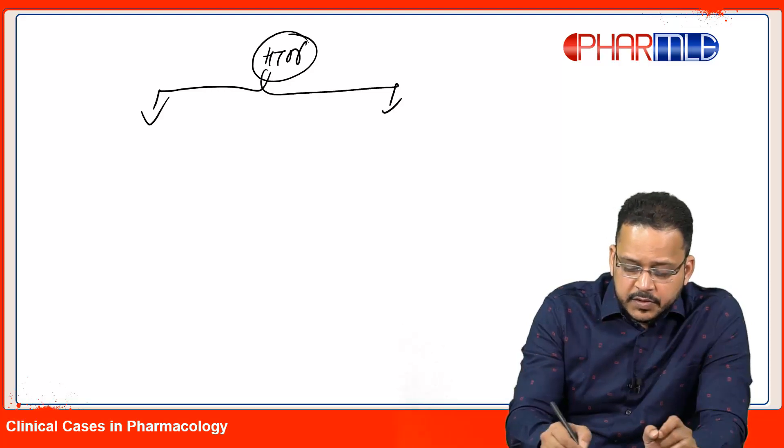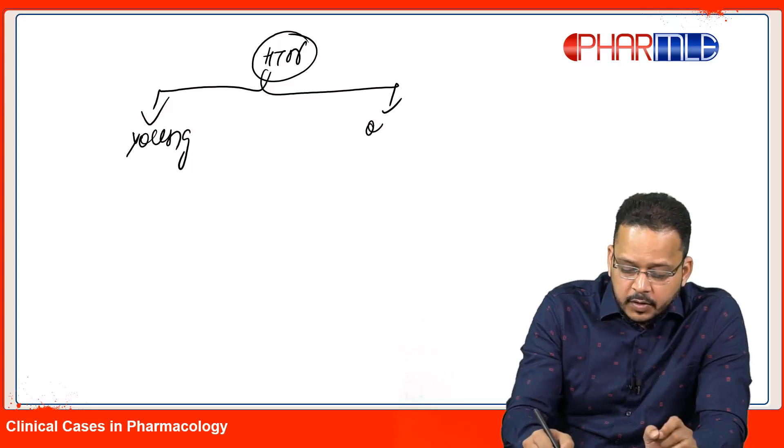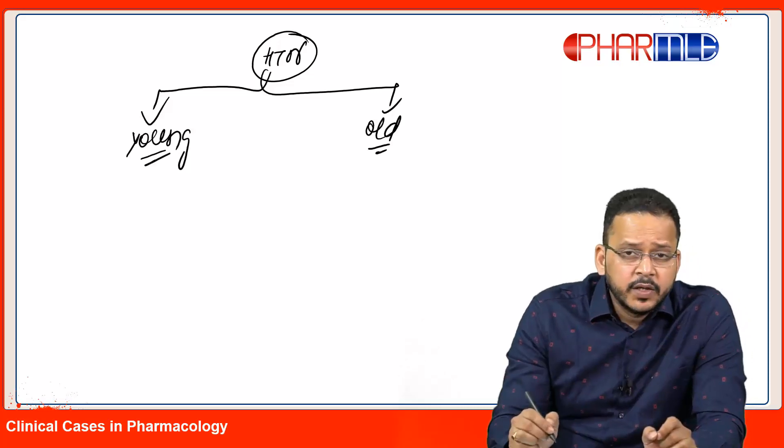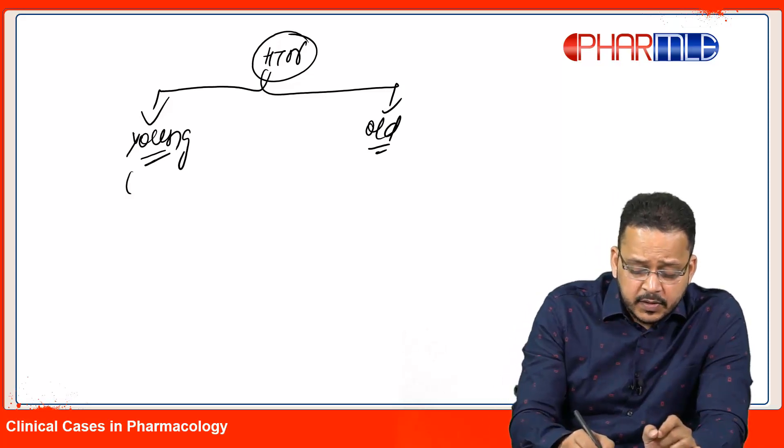Whenever I talk about treatment of hypertension, I can broadly classify patients into young and old age hypertension. Young age means less than 55 years.